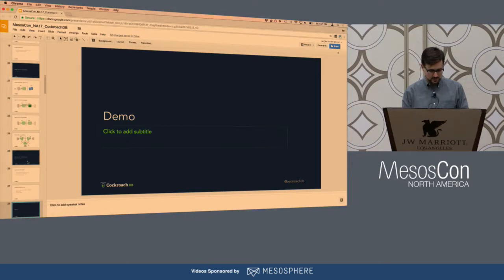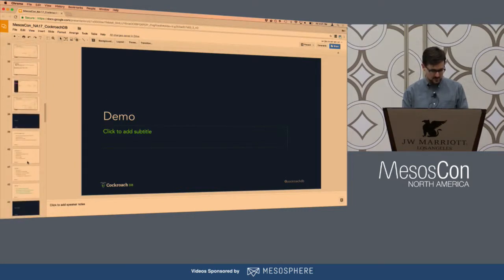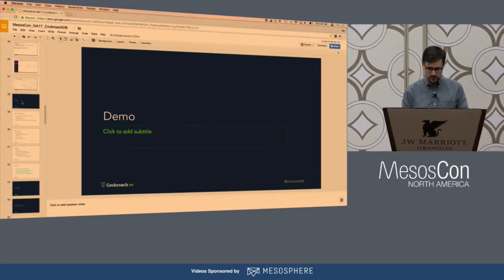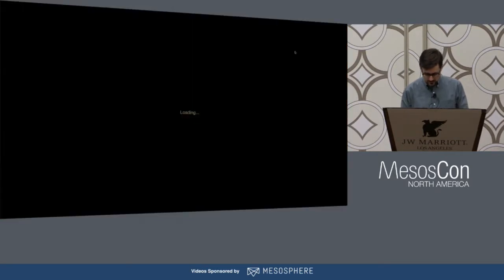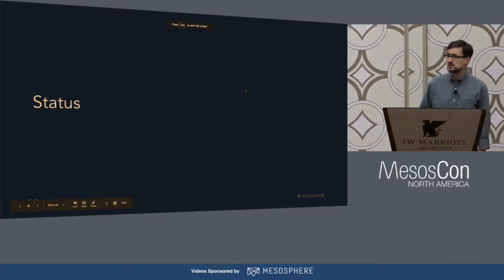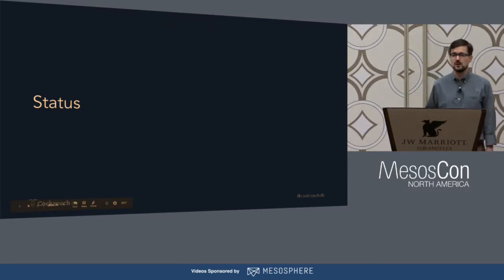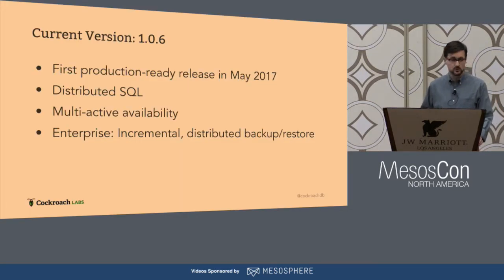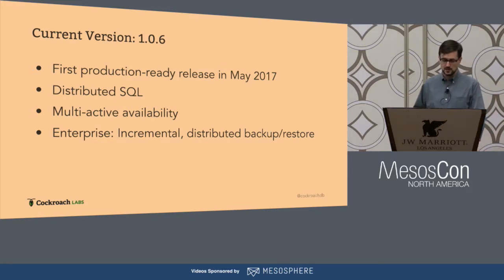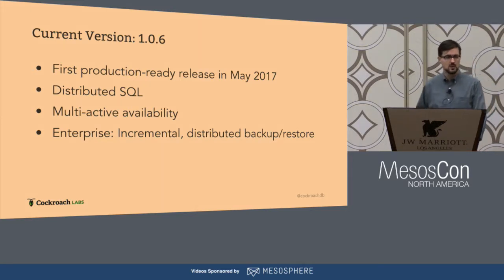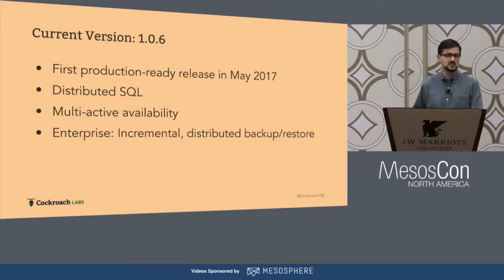That's an example of how easy it is to run CockroachDB on DCOS. Now back to the presentation — I'm going to tell you about the current status of CockroachDB. The current version, which was just released yesterday, is 1.0.6. Our first production-ready release was in May of this year, so this is our sixth patch release since then.